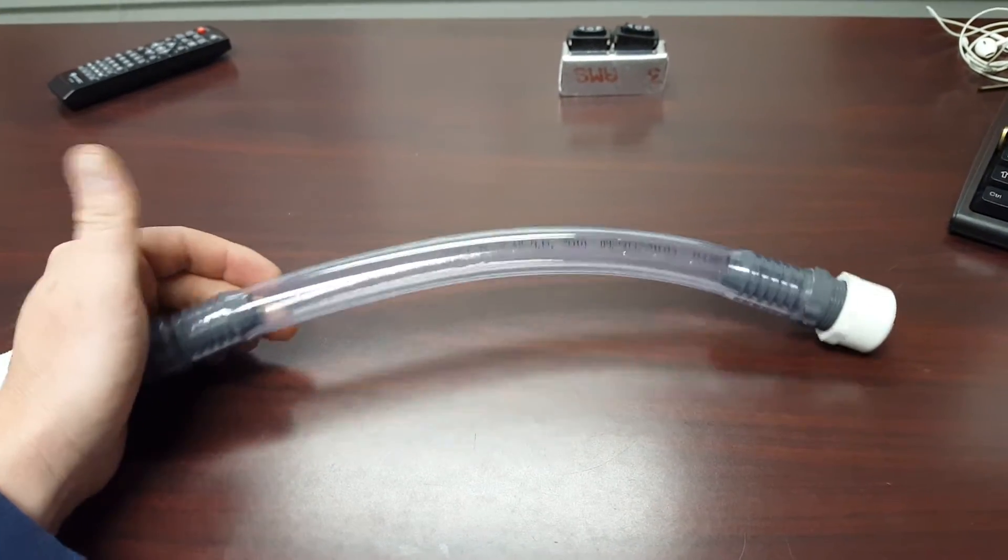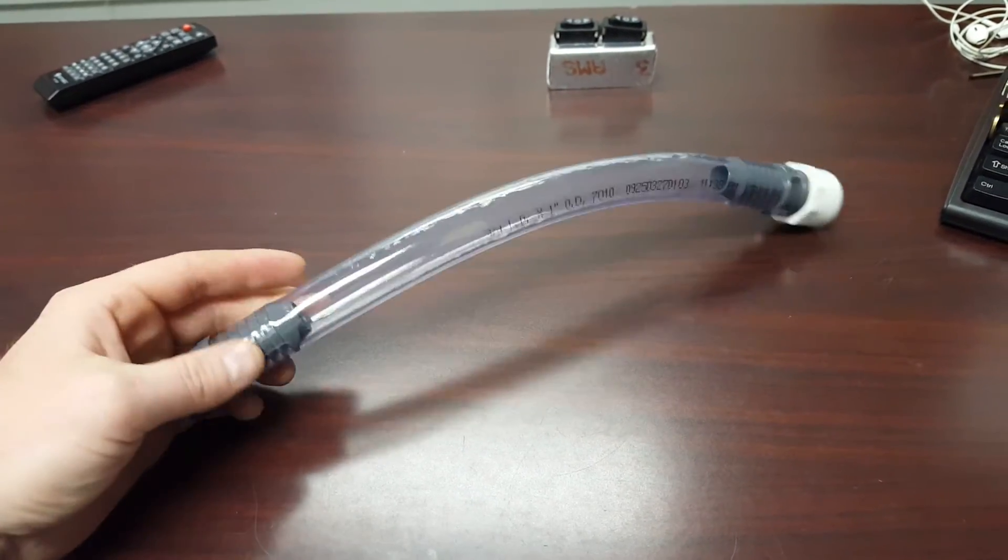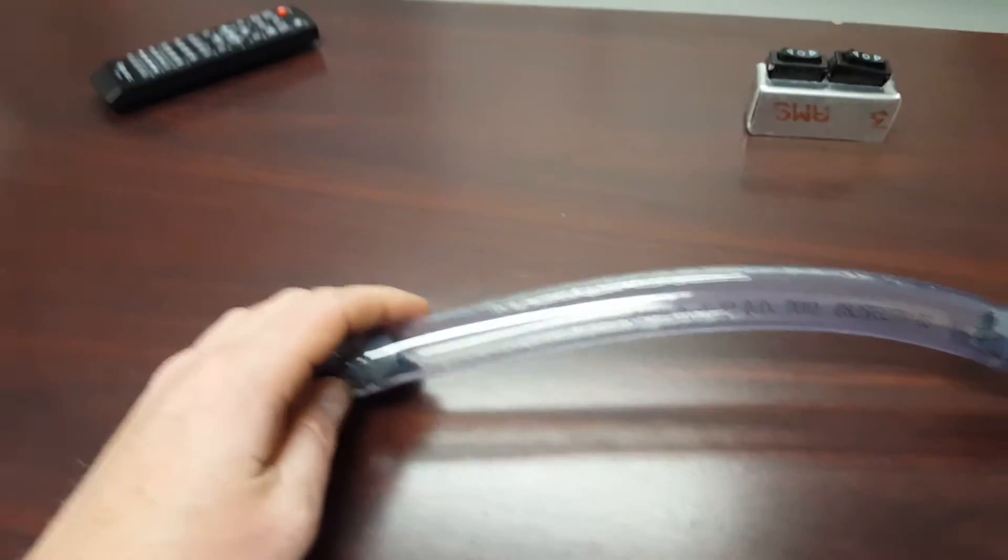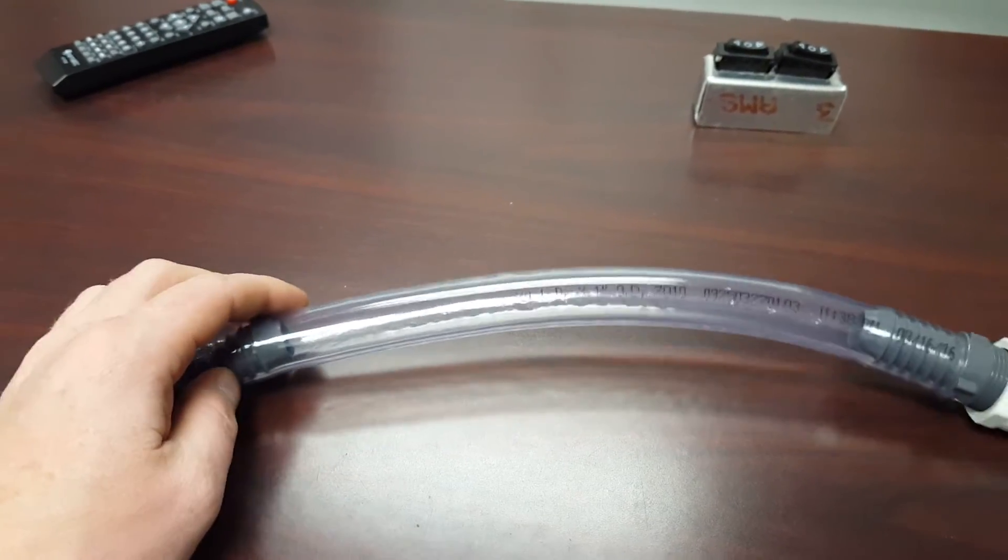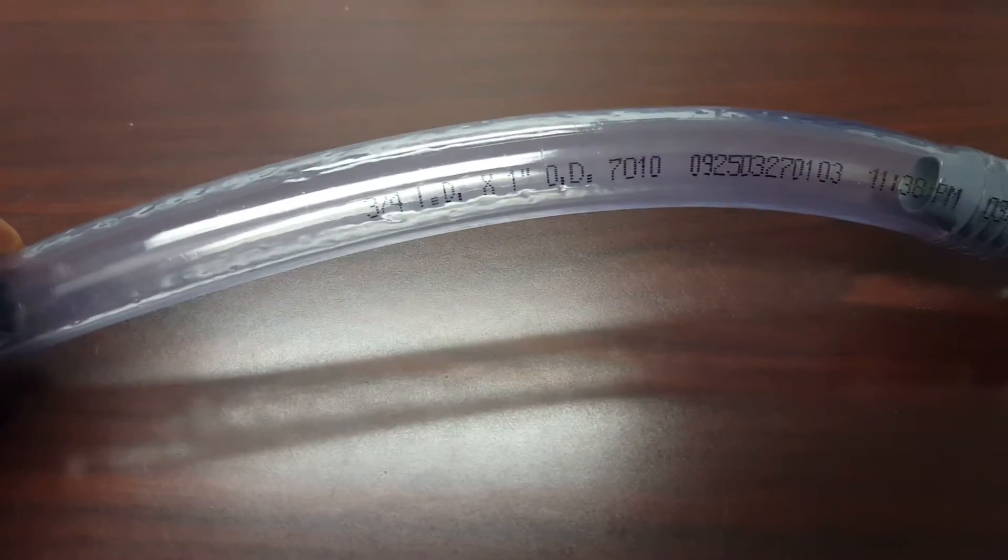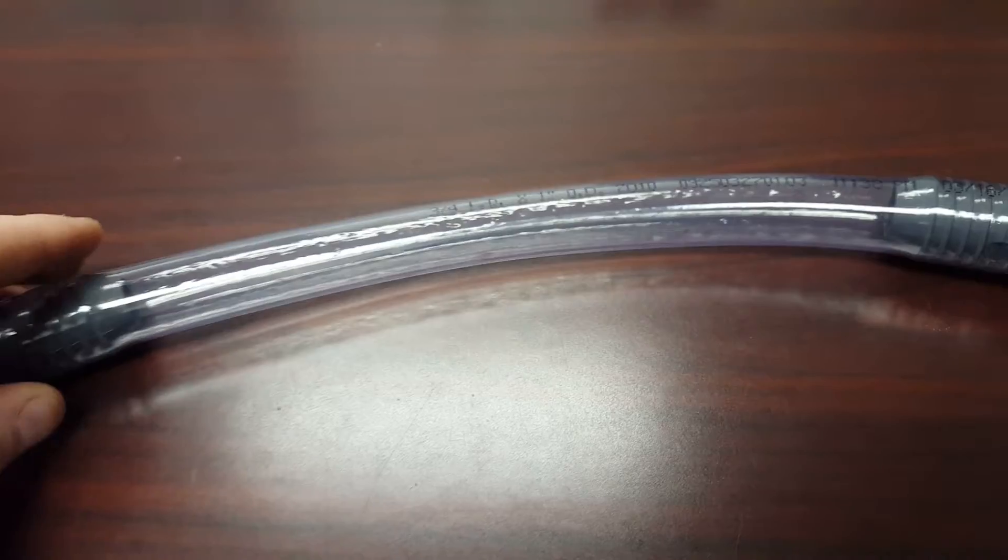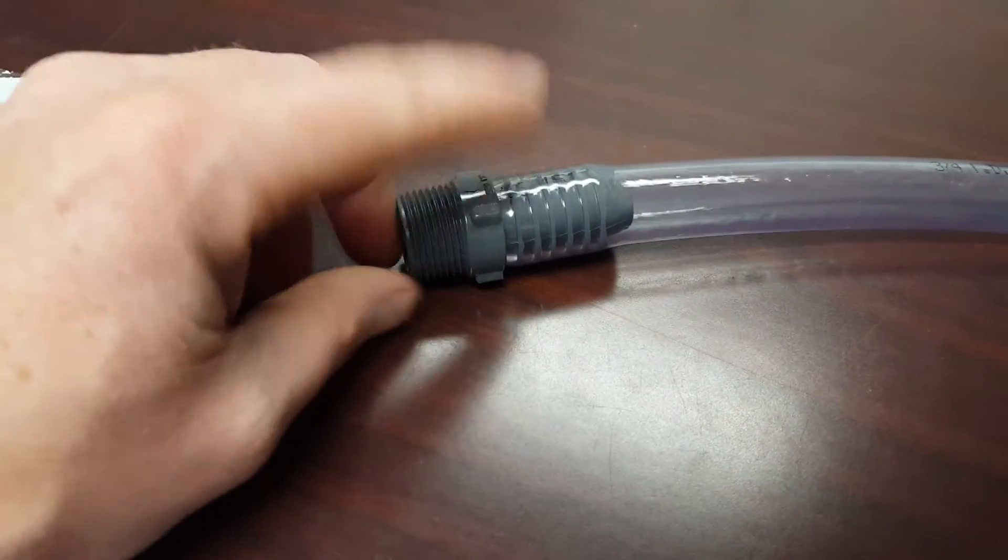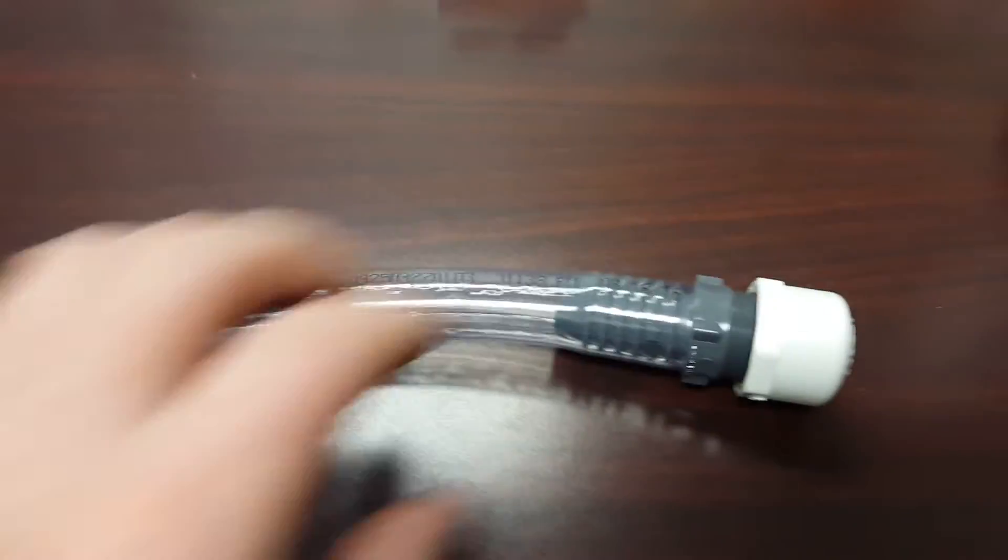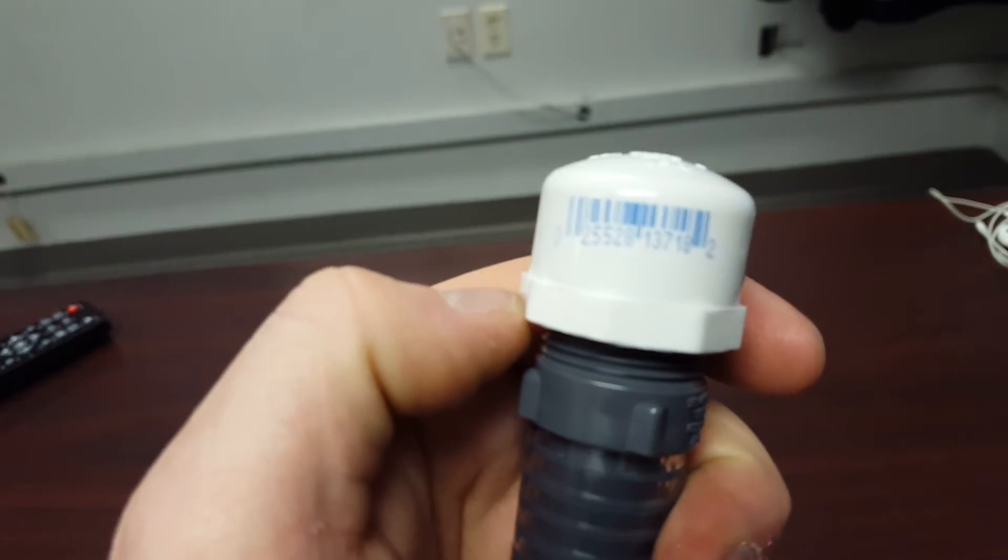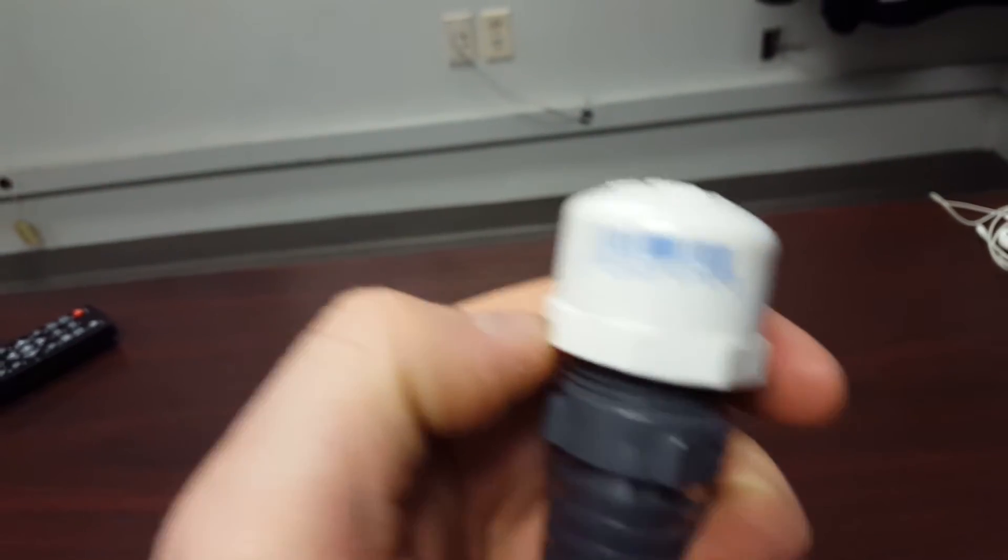All we did was go to Lowe's. We bought this three-quarter inch inside diameter, one inch outside diameter hose and two of these barbs, and then a cap. That's the number for it.